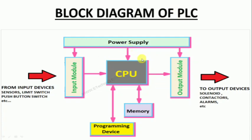The block diagram shows the power supply, the input module, the output module, and the programming device. The programming device is a personal computer. In the CPU, there is the input module and the output module. The input module connects to switches, sensors, and push buttons.